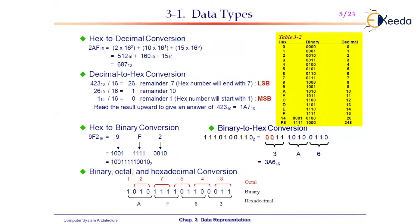For decimal to hexadecimal conversion, just as we divide by 2 for decimal to binary, we divide by 16 for decimal to hexadecimal. For example, 423 base 10 should be converted to base 16 by dividing by 16.